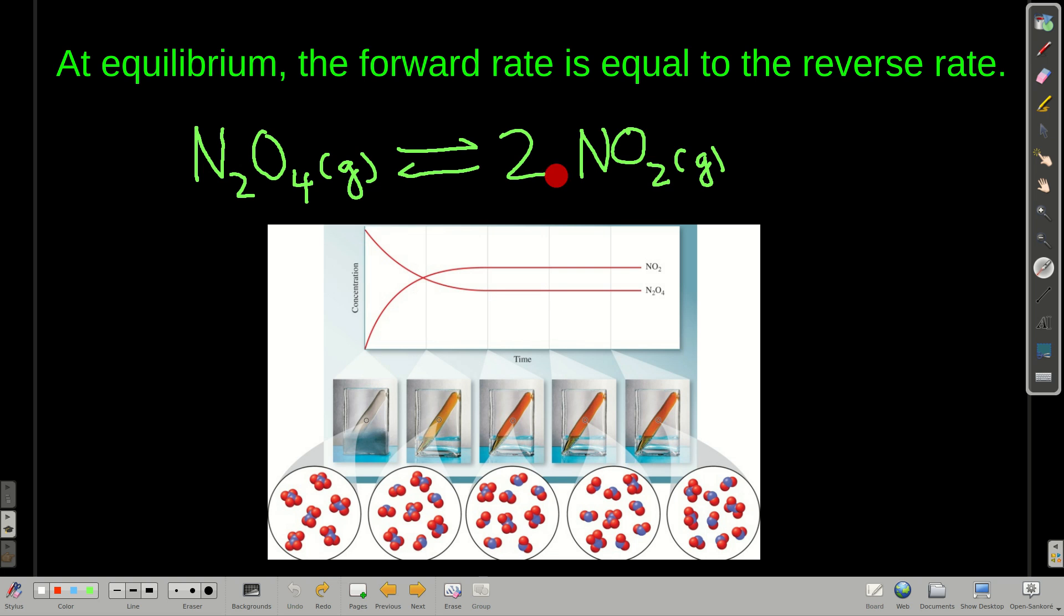And the same thing with the nitrogen dioxide. At first, its concentration is increasing rapidly because there wasn't any to begin with and we're just making it. But as we start to make it, some of them start to come together and go back and there's fewer of these breaking apart.